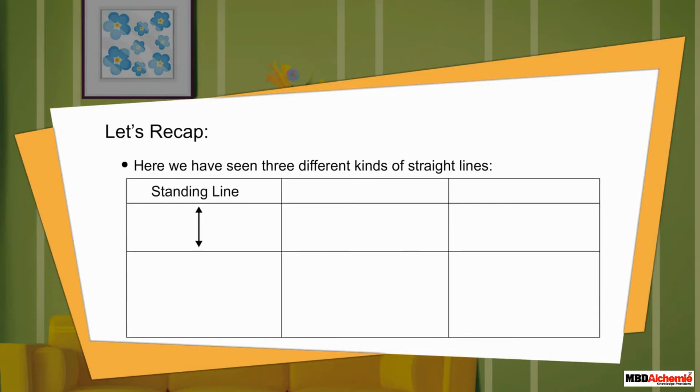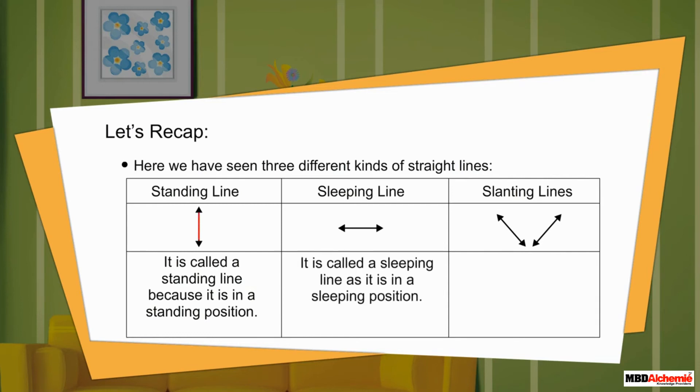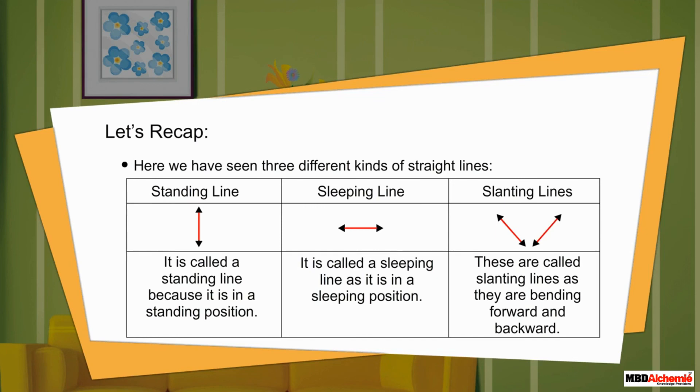Standing line, sleeping line and slanting lines. It is called a standing line because it is in a standing position. It is called a sleeping line as it is in a sleeping position. These are called slanting lines as they are bending forward and backward.